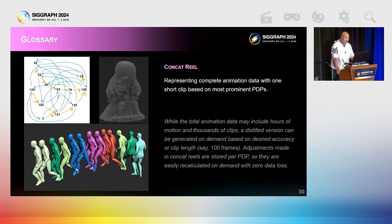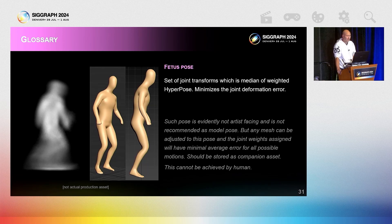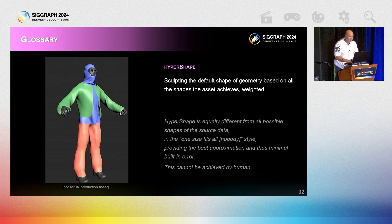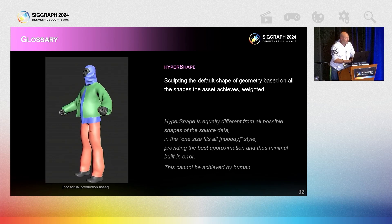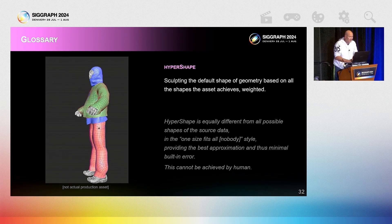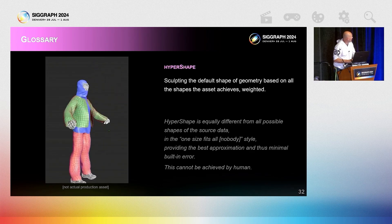We're heavily basing Savant on the hyperpose concept of concat real, which concatenates the most prominent PDPs of a large motion set on a short timeline. A median of weighted hyperpose then provides us with the so-called fetus pose, which gives the lowest average error possible. I don't suggest we model in this — I simply claim that a model adjusted to this pose will have the least built-in error when animated. In terms of cloth, provided we simulate capture sculpted over concat real, we can find the best skin pose shape of cloth for any pose, including T-pose or fetus. The result is puzzling and insulting to common sense, and yet it is accurate for the asset in question.